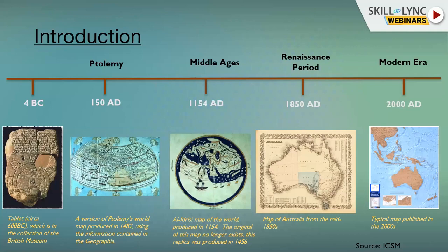Moving into the Renaissance period around 1850 AD — this example map of Australia shows that by then, most mapping was done for travel, mostly for ship movements. Finally in the modern era, there has been a vast growth in mapping, with more than 1,000 to 1,500 applications. So maps have always been a part of us throughout history.